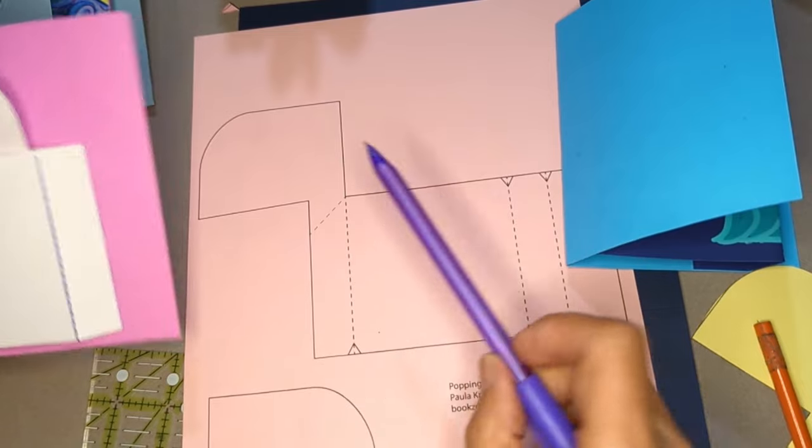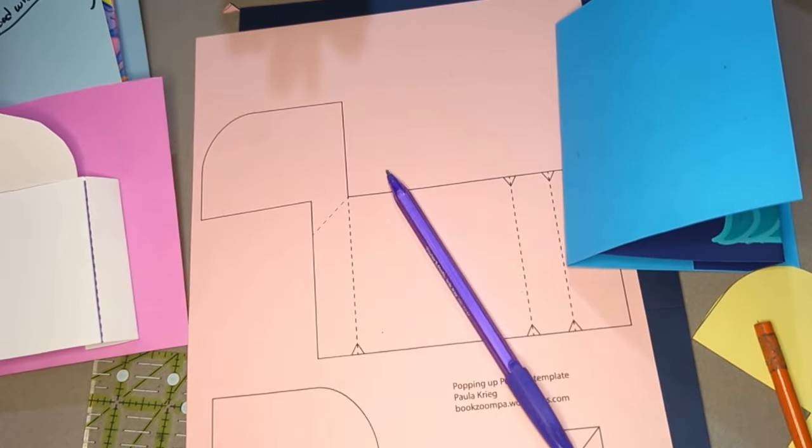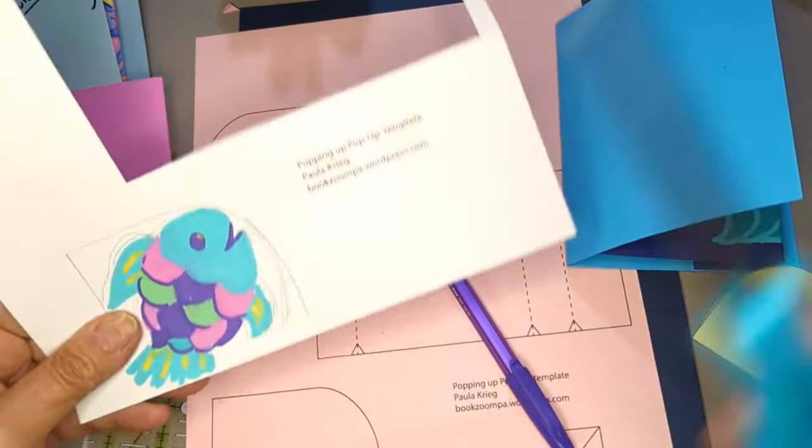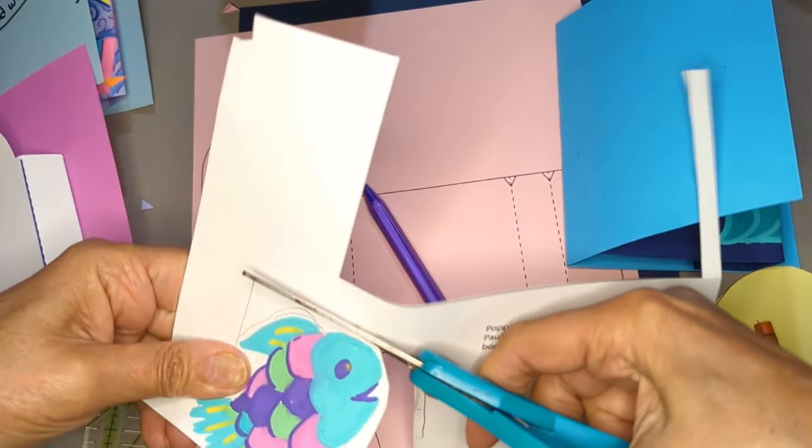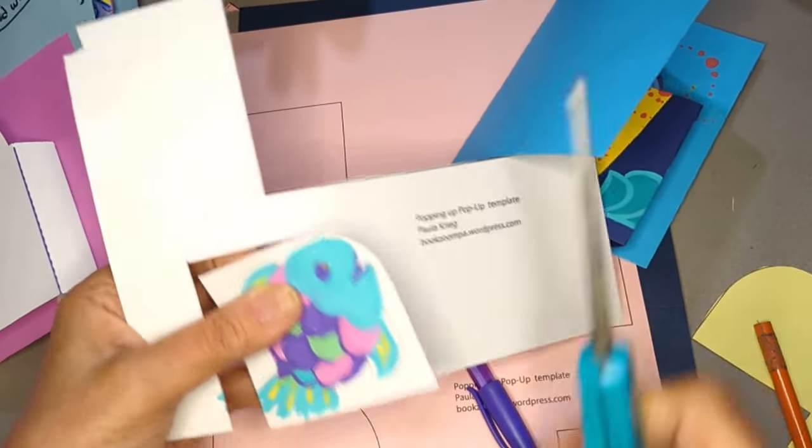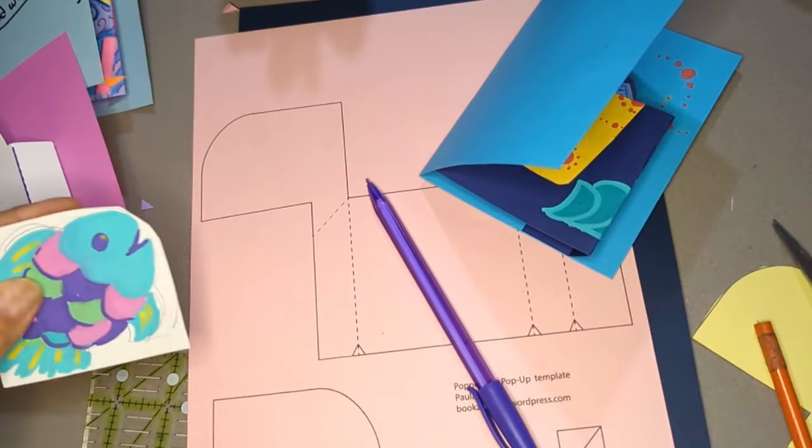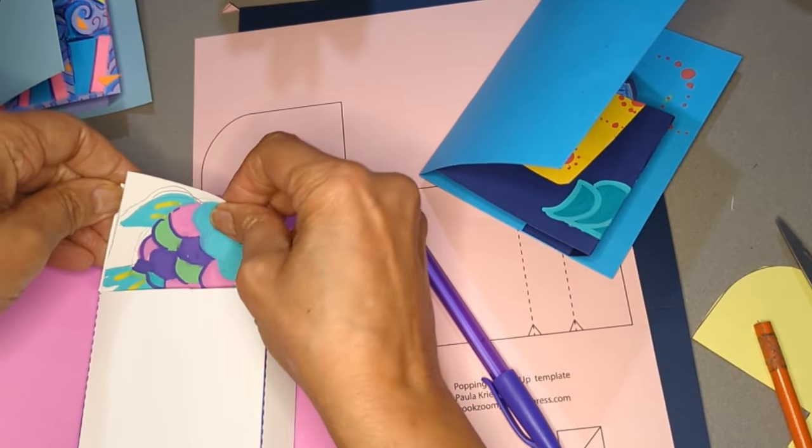So you can either just turn it over and draw your design on the back or you can use that little piece below to draw your design on and then glue it onto there.